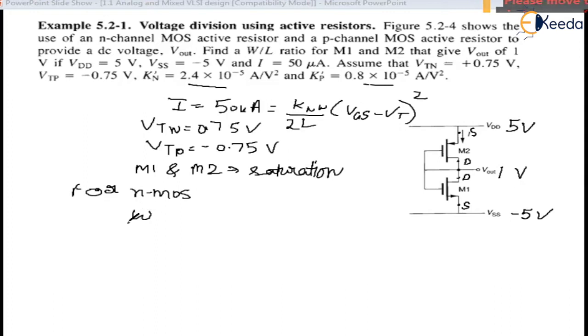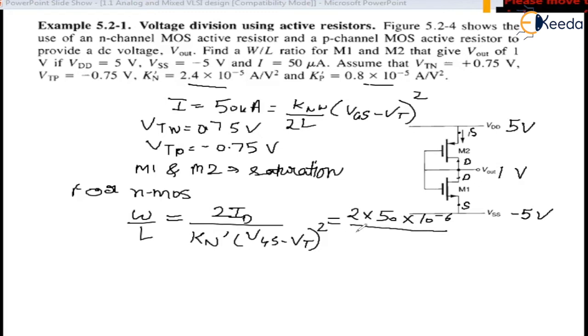So W/L ratio for NMOS can be written as 2 I_D upon K_n' (V_GS - V_T)^2. It can be written as 2 into I_D is given 50 microampere, 10 to the power minus 5.